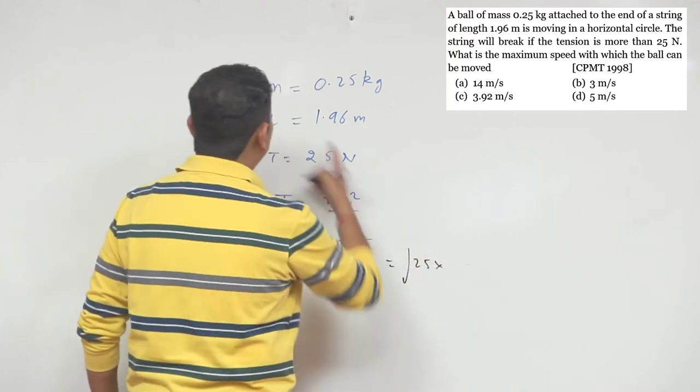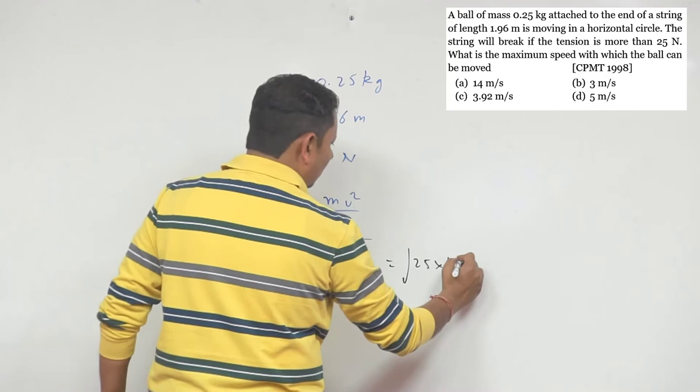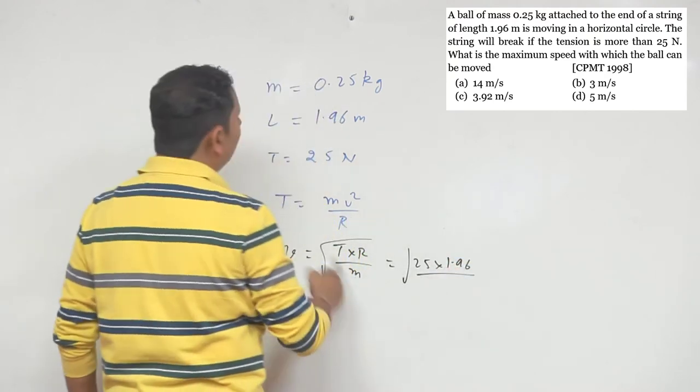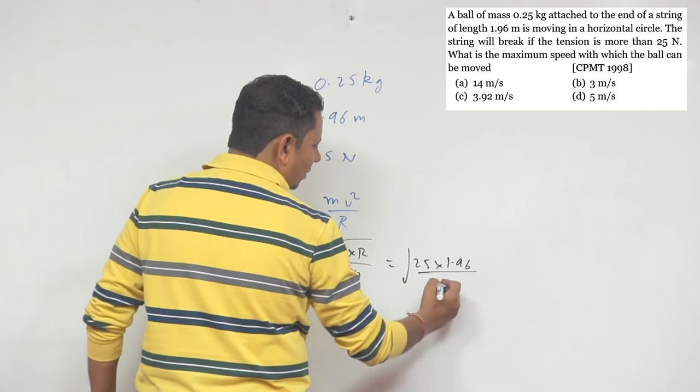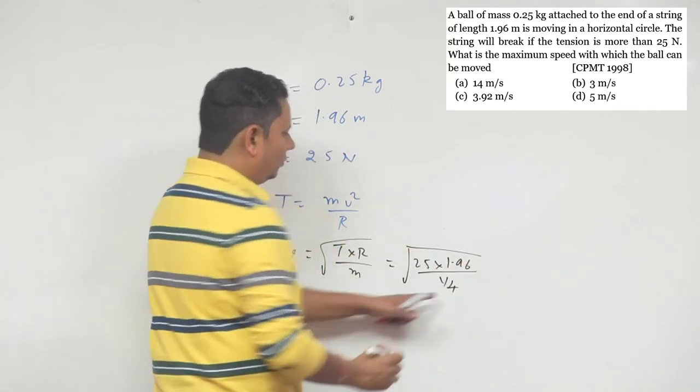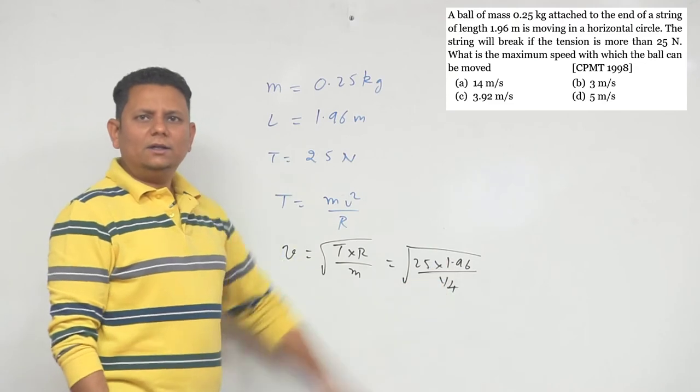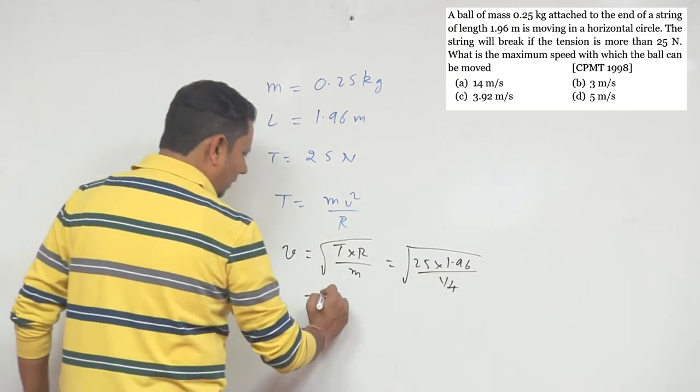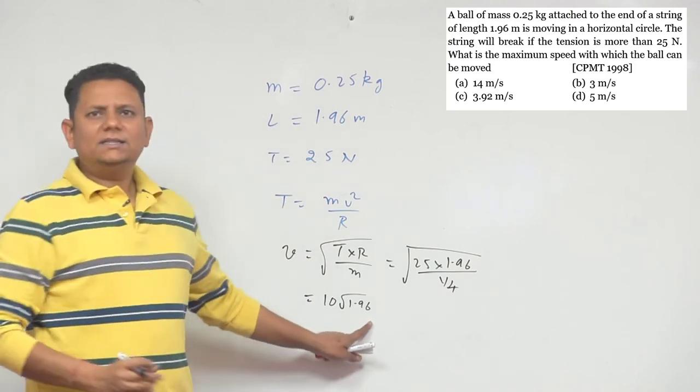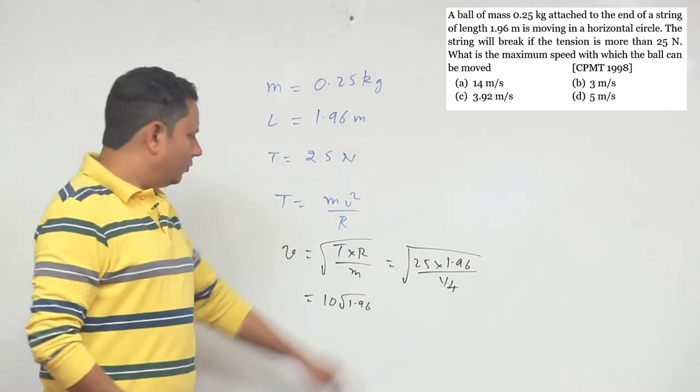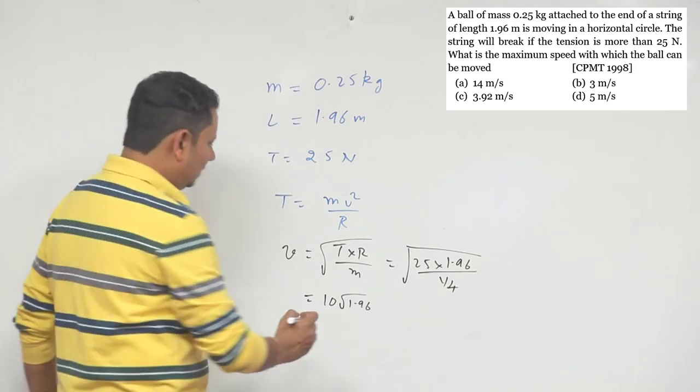Velocity will be square root of 25 multiplied by r, that is 1.96, divided by mass 0.25 or 1/4. The 4 goes up and multiplies to make 100, so the value becomes 10 under root of 1.96. Since 1.96 is 1.4 squared, the under root is 1.4.